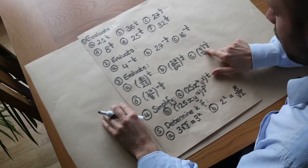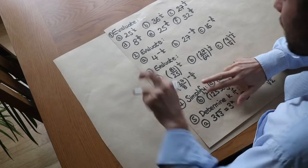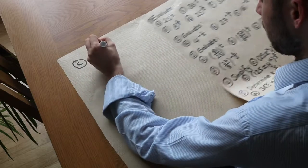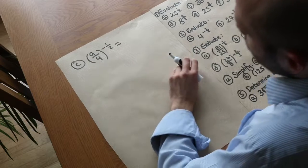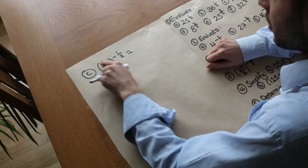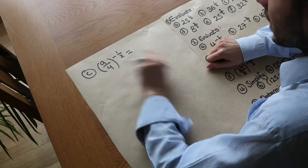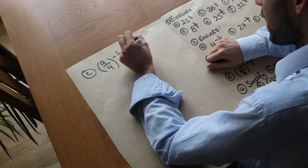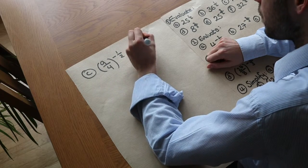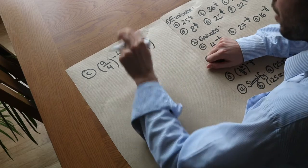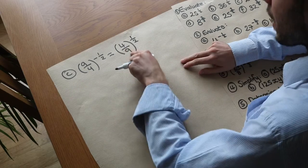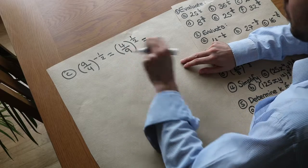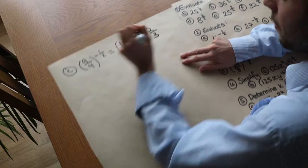For 9 over 4 to the power of minus half: from the previous video, a fraction to a negative power flips the fraction. So we have 4 over 9 to the power of a half. Then we square root the numerator and denominator separately: the square root of 4 is 2, and the square root of 9 is 3, giving 2 over 3.